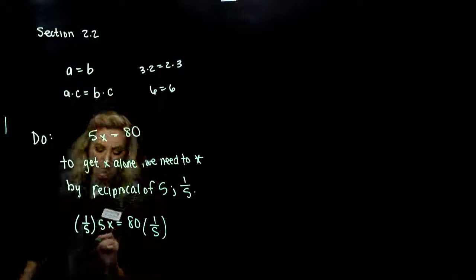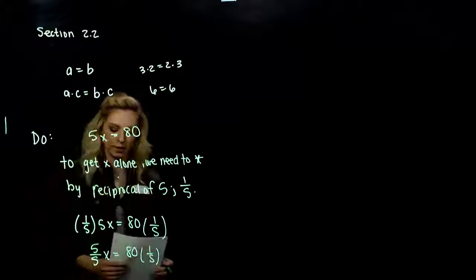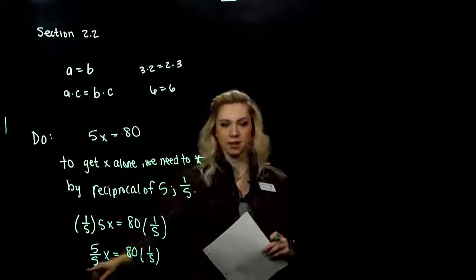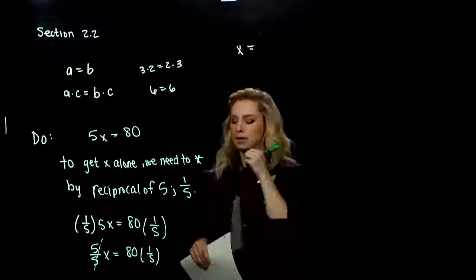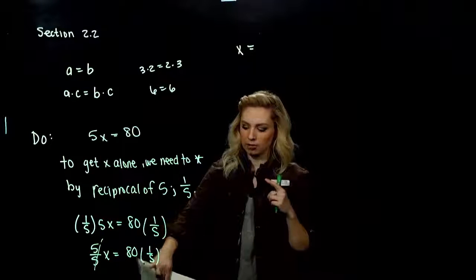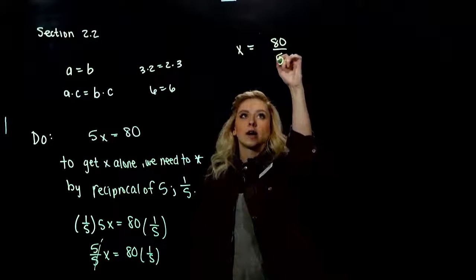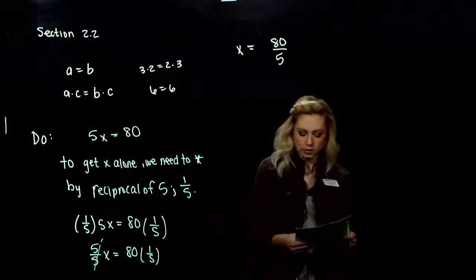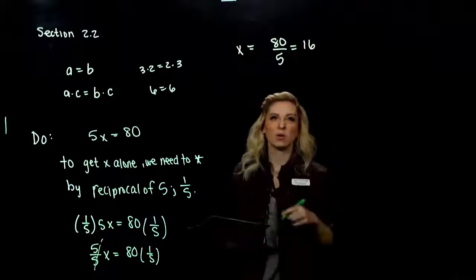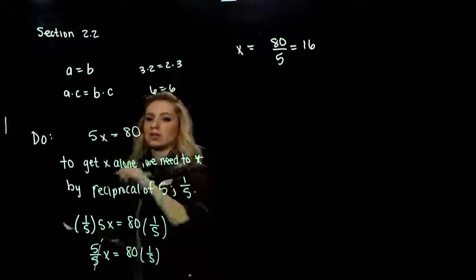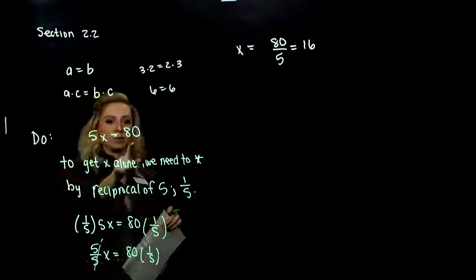If we multiply it out — same thing divided by the same thing — that gives us 1. So those cancel out and we're just left with x. And on the right-hand side, 80 times 1/5: multiply straight across the top, straight across the bottom, we're looking at 80 divided by 5, which gives us 16. We can always plug it back in and check — if I multiply 16 times 5, does it give me 80? And it does.